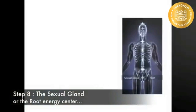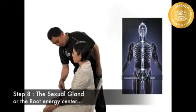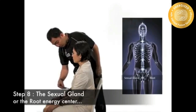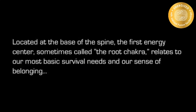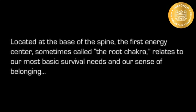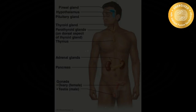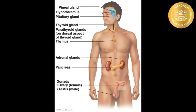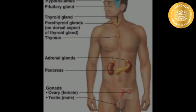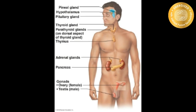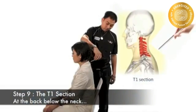Step 8: The sexual gland, or the root energy center. Located at the base of the spine, the first energy center, sometimes called the root chakra, relates to our most basic survival needs. Sex glands are producers of hormones which are used to stimulate various functions and development of structures at particular times of our life cycles.